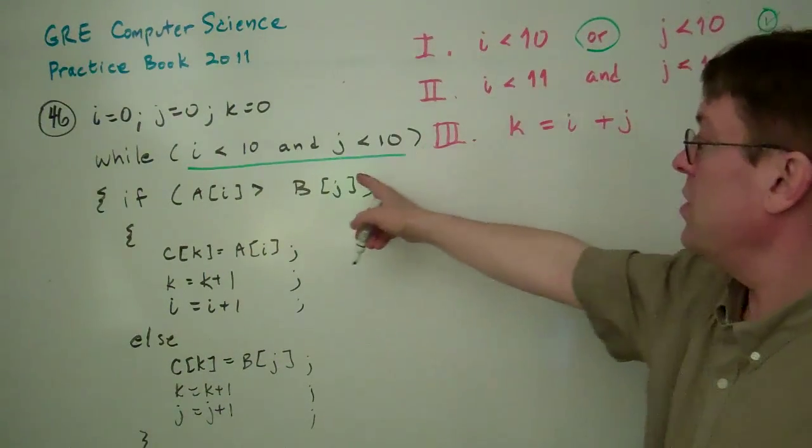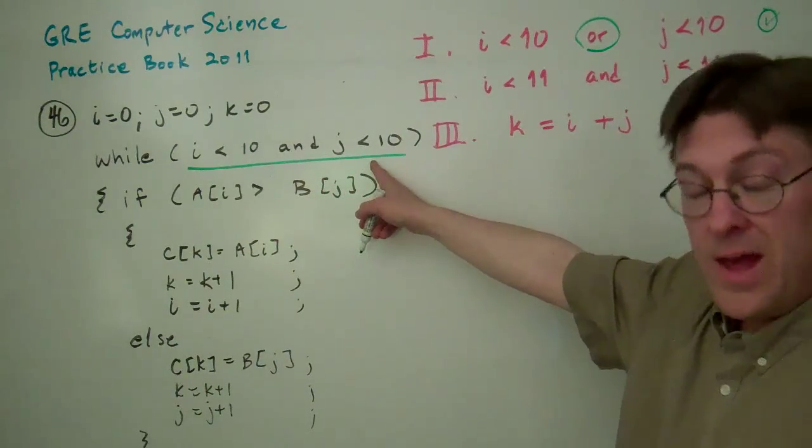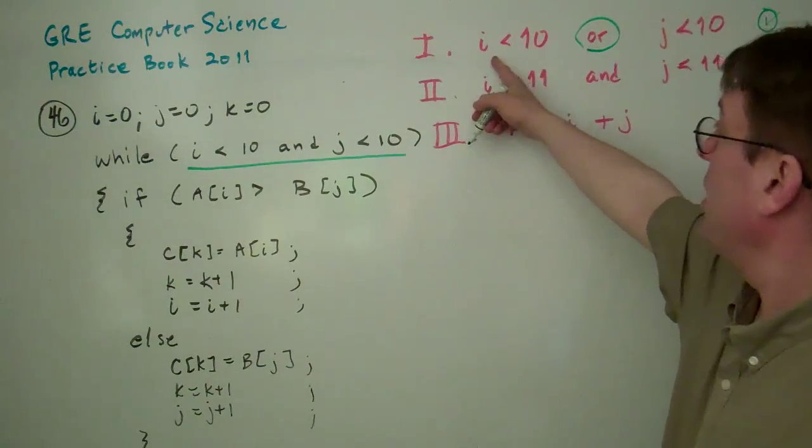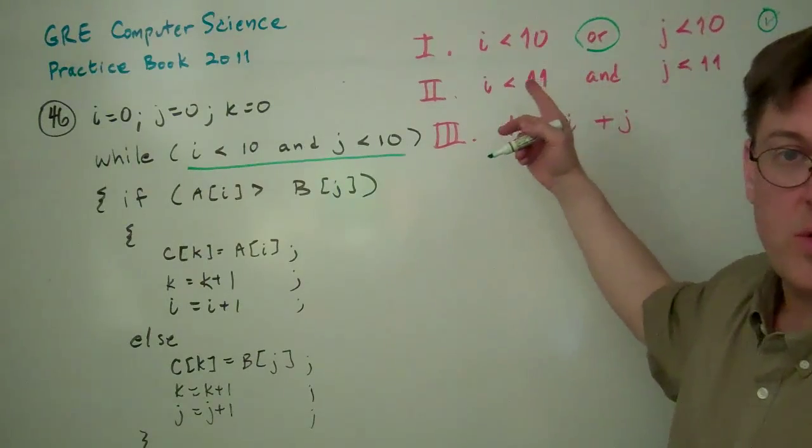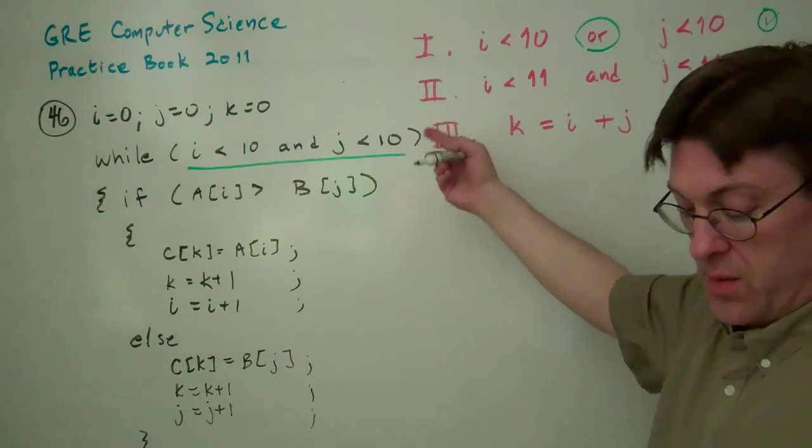If it's true that during this loop I is always less than 10 and J is always less than 10, then certainly it's going to be true that I is less than 10 or J is less than 10. Because this includes more options than this does. So that one's true.